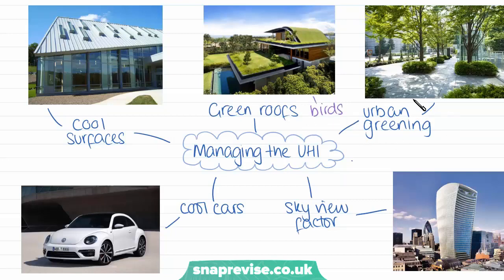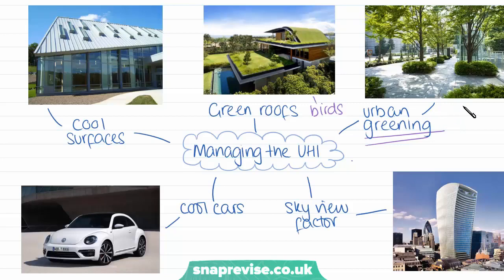Then we also have a strategy called urban greening, which is essentially planting more trees and vegetation in cities. Not only do they provide shade to the lower ground and stop the pavements heating up as much, they also have a cooler effect because trees have a higher albedo than the dark surfaces normally found in cities, so they absorb less radiation and essentially make the cities cooler. Urban trees can also act as carbon stores and reduce pollution in cities by absorbing the CO2 emitted from cars and from industry.